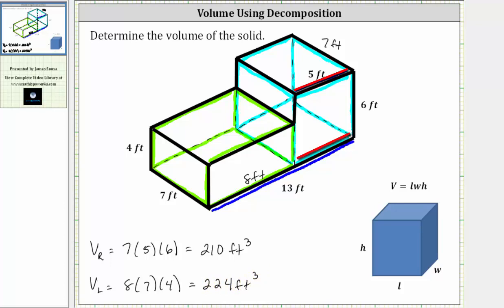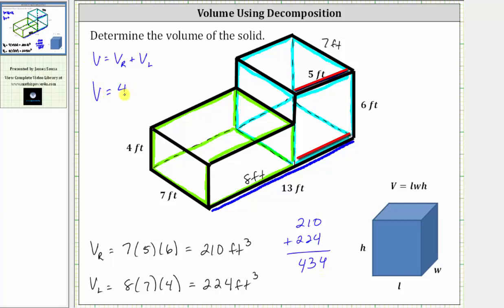Therefore the total volume V is equal to the volume of the box on the right, V sub R, plus the volume of the box on the left, V sub L. And 210 plus 224 equals 434, so the total volume V is equal to 434 cubic feet. I hope you found this helpful.